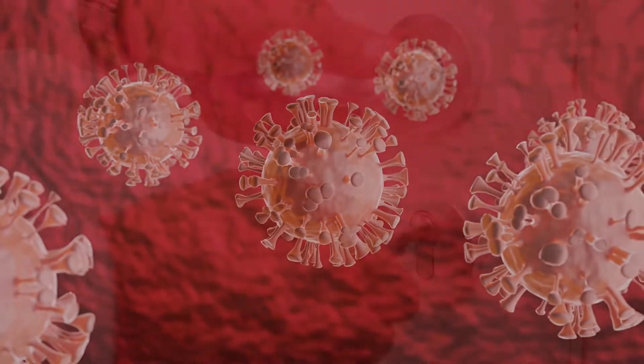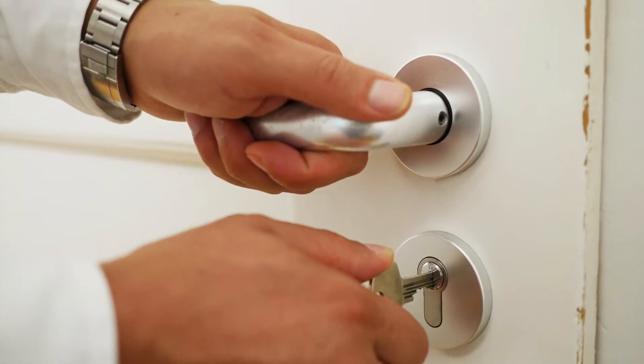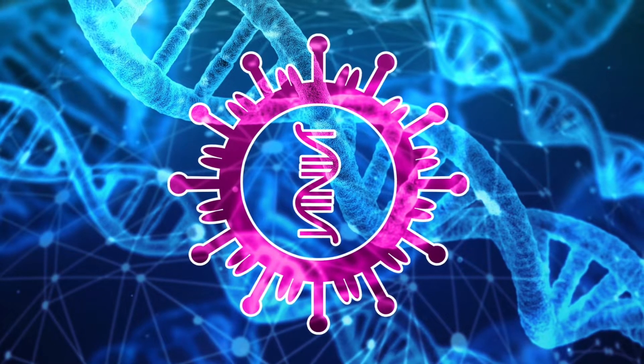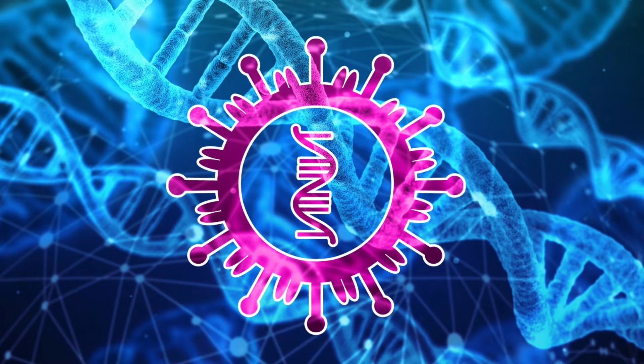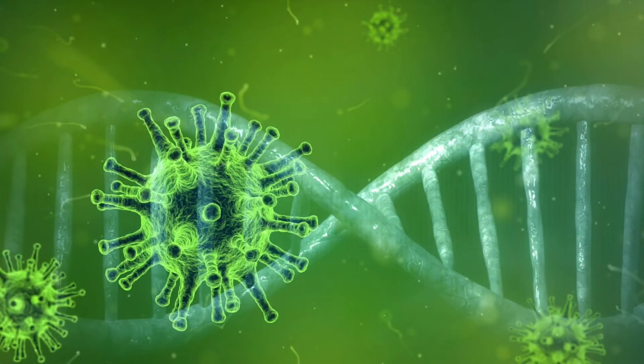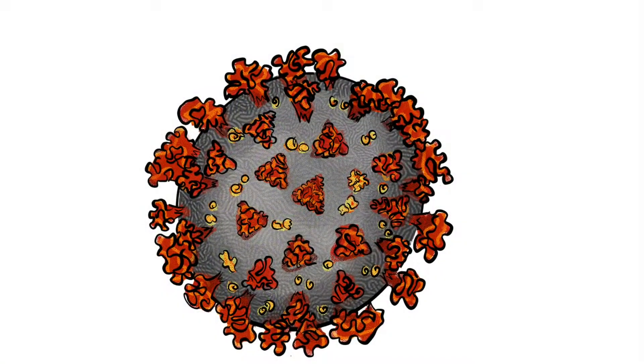It's just like unlocking a door with a key to gain entry. After entering the cell, it hijacks the cell's internal machinery to produce its own copies. In a normal healthy cell, this machinery is used to produce more copies of the normal cell.